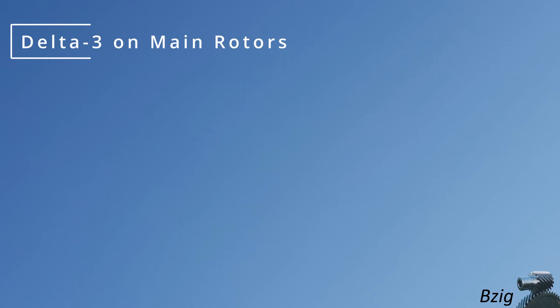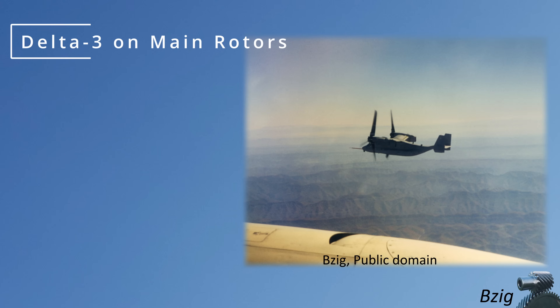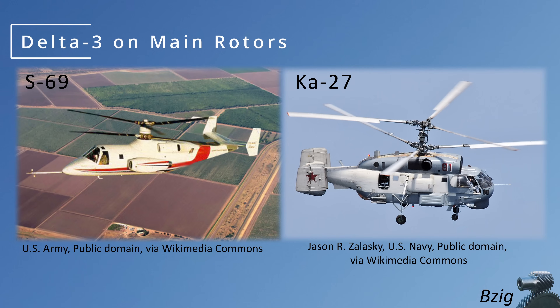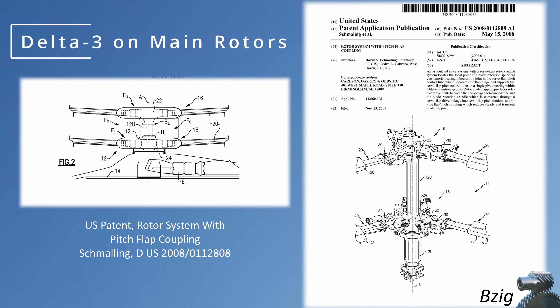You may wonder why we don't also use delta-3 on main rotors. Although rare on main rotors, it is used — notably on tilt rotors. For comparison, here are two coaxial rotor helicopters. I'll make an educated assumption that the reason the S69 can get away with more closely spaced main rotors than the Ka-27 is that the S69 likely incorporates a delta-3 flapping hinge for the main rotor. Supporting that idea is Dave Schmalling's patent for a rotor system with pitch-flap coupling showing its application on a coaxial rotor system. Delta-3 hinges reduce flapping needed to compensate for forward flight dissymmetry, making them appropriate for closely spaced coaxial rotors.